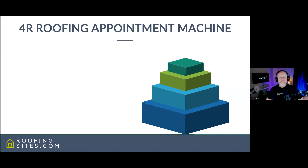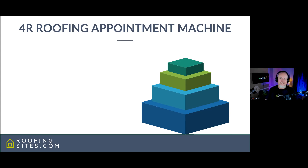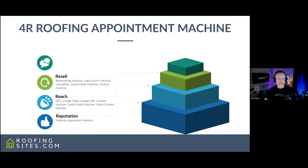Before we get into ads and all that, let's first talk about the marketing framework — what we call our Roofing Appointment Machine. This is a system I have built over the past 20 years and I'm not going to get super in-depth, but it consists of four pillars: reputation, reach, resell, and referral.